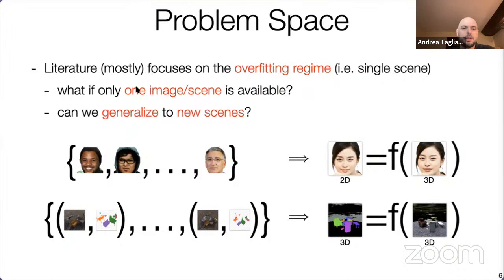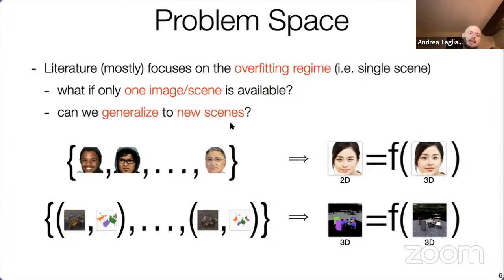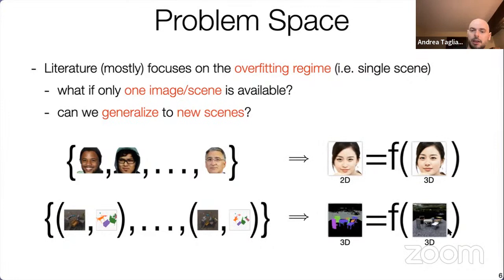What if you only have one image of each scene? For example, with CelebA, we have a single image of each person. Can we learn that a 2D picture of a person is actually a projection of an underlying 3D model? And for generalization — if given pairs of images and semantic maps, can we construct a NeRF model that learns the mapping between geometry and semantic signal in a generalizable fashion? These are three angles I want to cover today.